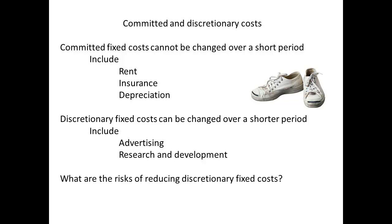Fixed costs may be grouped as committed or discretionary. The rent on premises has to be paid regardless of whether any production is taking place, so this would be considered a committed cost. In contrast, although the cost of advertising is often fixed at a level for the period, it could be changed at short notice, making it a discretionary cost. Discretionary costs, which include things like research and development, can be cut if needed. However, this can have consequences — if advertising is cut, sales may fall, and if no money goes into research and development, a business may not be able to keep up with competitors.